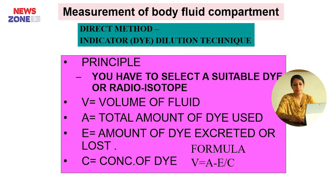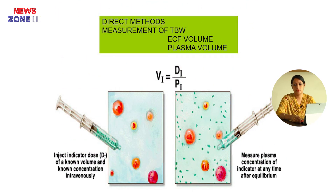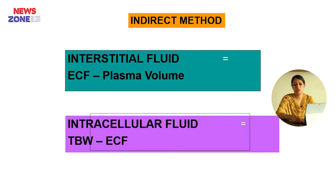Now, the measurement of the body fluid compartments. There are two methods to measure the body fluid compartments: direct method and indirect method. The direct method, also known as the indicator or dye dilution technique. The principle: we select a suitable dye or radioactive isotope. The formula is V equals A minus E divided by C, where V equals volume of the fluid, A equals total amount of dye used, E equals amount excreted or lost, and C equals concentration of the dye. By direct method we can measure total body water, extracellular fluid volume, and plasma volume. By indirect method we can measure interstitial fluid and intracellular fluid.